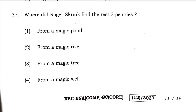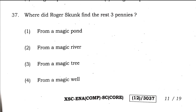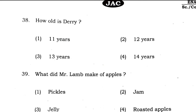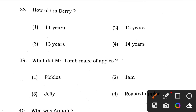Question 37: where did Roger Skunk find the remaining three pennies? From the magic well — so the answer to question 37 is option 4. Question 38: how old is Derry? The right answer is 14, so question 38's answer is option 4. Question 39: what did Mr. Lamb make of apples? He made jelly, so the answer to question 39 is option 3.